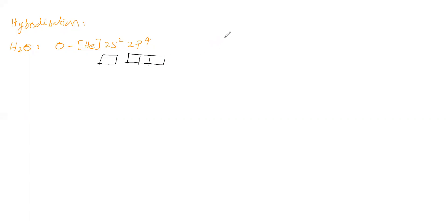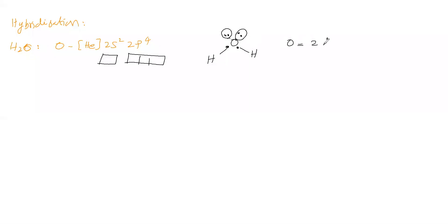As per VSEPR theory, the water molecule shape has oxygen and two hydrogens. Oxygen comes under group 6A, so this valency shell contains 6 electrons. Out of 6 electrons, 2 electrons have gone for bonding, remaining 4 electrons form two lone pairs. So central atom oxygen in water has 2 lone pairs and 2 sigma bond pairs.